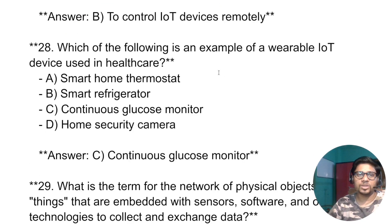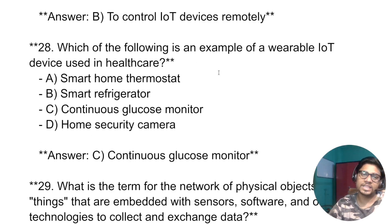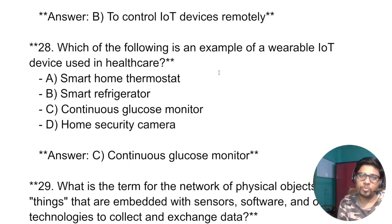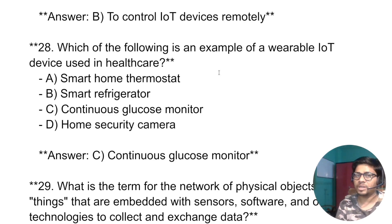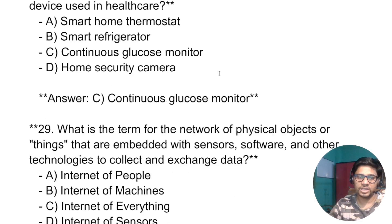Which of the following is an example of a wearable IoT device used in healthcare? Options: smart home thermostat, smart refrigerator, or continuous glucose monitor. The answer is: continuous glucose monitor — a wearable device used in healthcare.